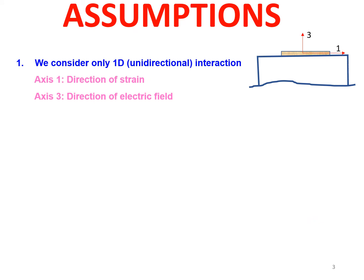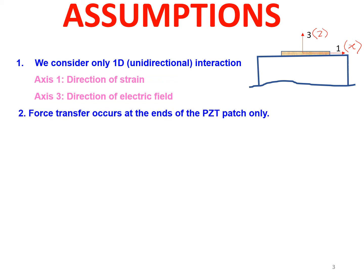Let us now see the assumptions in the model. Our first assumption is that we are deriving a 1D case. We assume that axis 1 is along the length of the PZT patch bonded on top of the host structure, and axis 3 is normal to it, along the thickness direction. So essentially we have the x-axis as axis 1, the z-axis as axis 3, and y is normal to the plane of the slide.